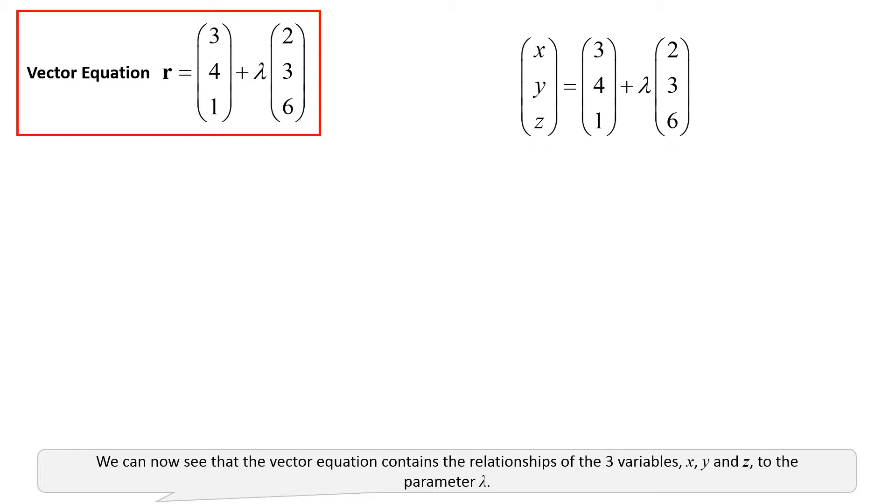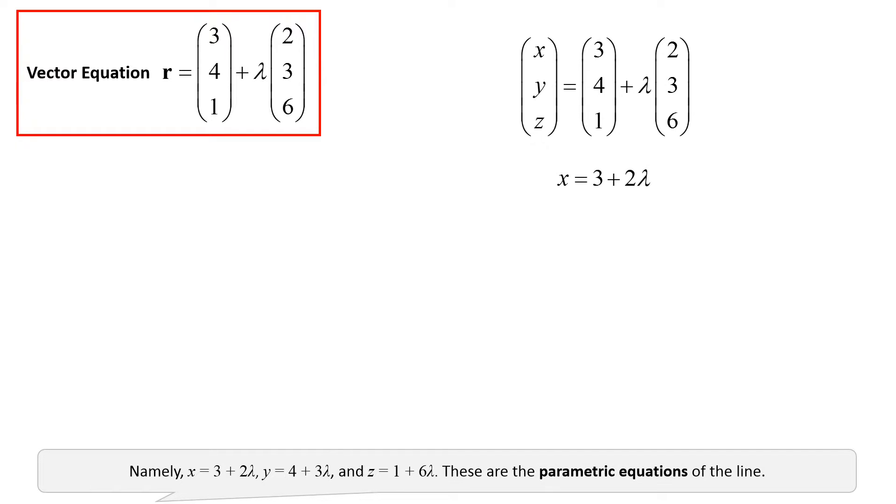We can now see that the vector equation contains the relationships of the three variables x, y, and z to the parameter lambda, namely: x equals 3 plus 2 lambda, y equals 4 plus 3 lambda, and z equals 1 plus 6 lambda. These are the parametric equations of the line.